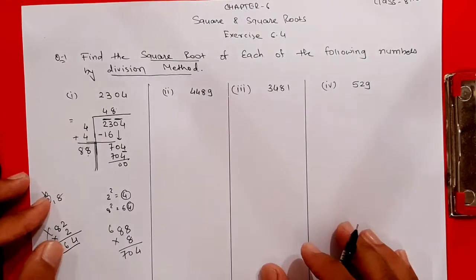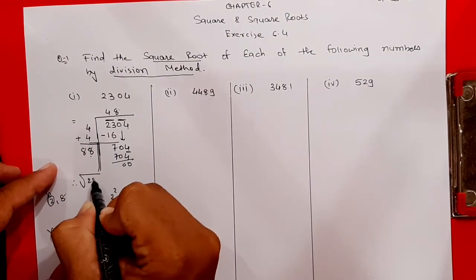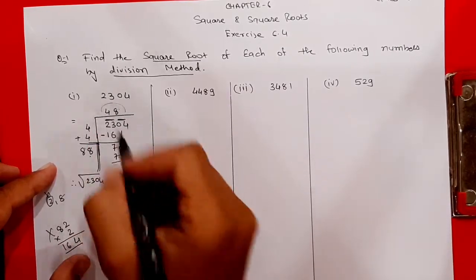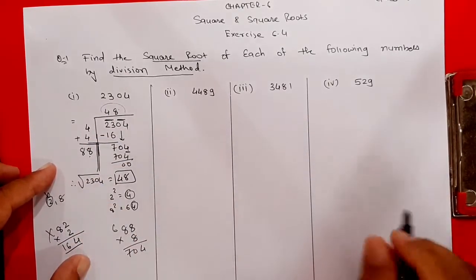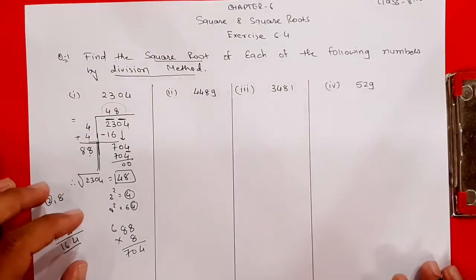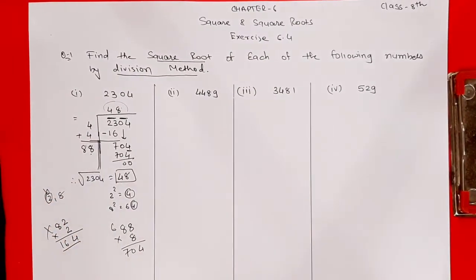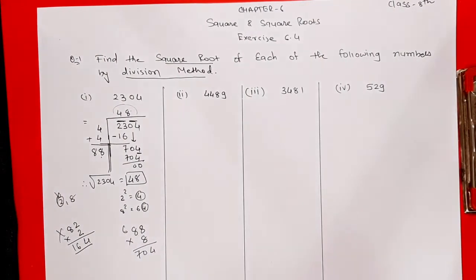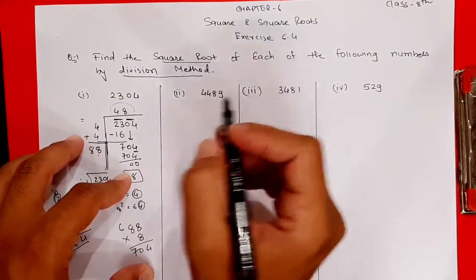Therefore, the square root of 2304 is equal to 48. This is your answer. I hope it's clear. This is called the division method to find the square root. Moving to the next question, that is 4489.